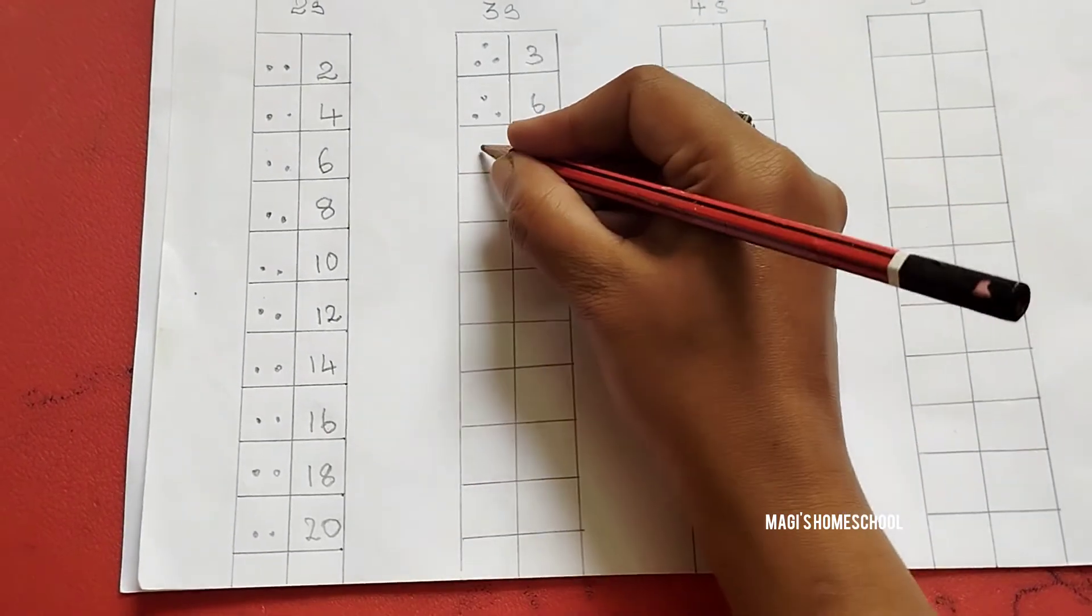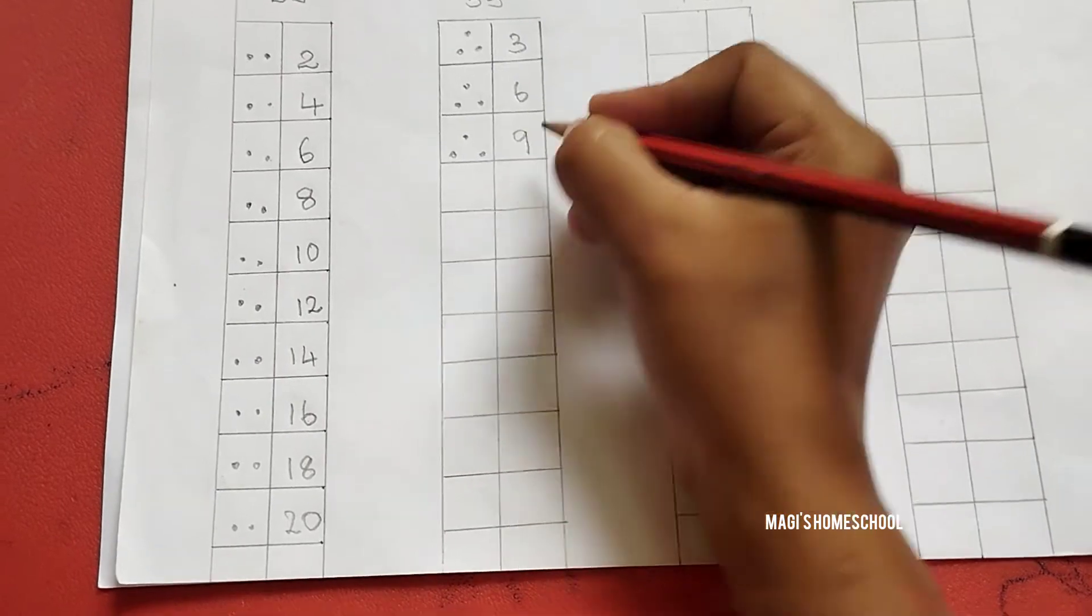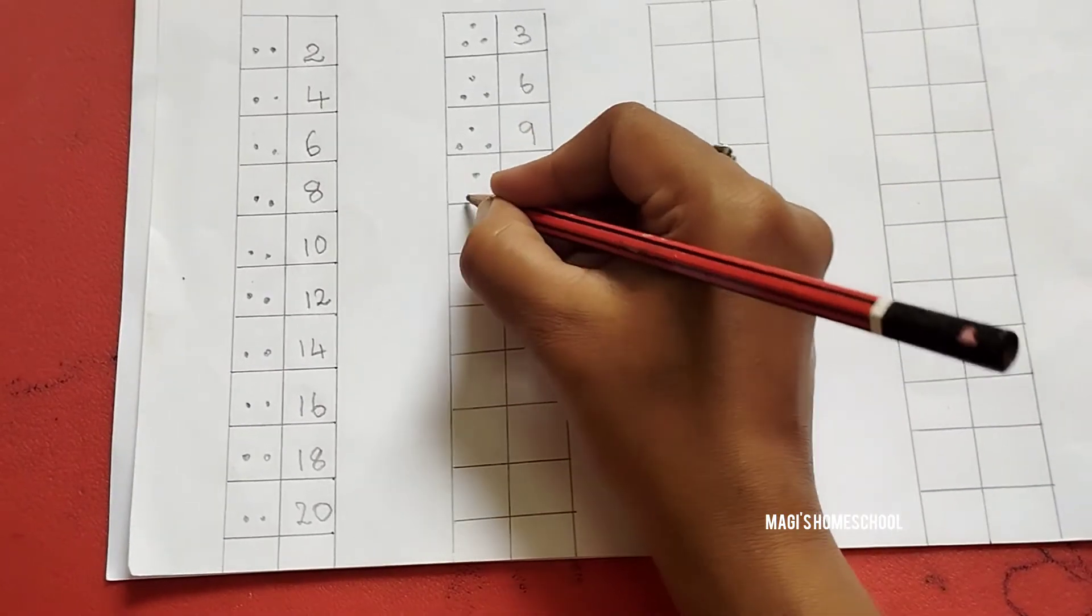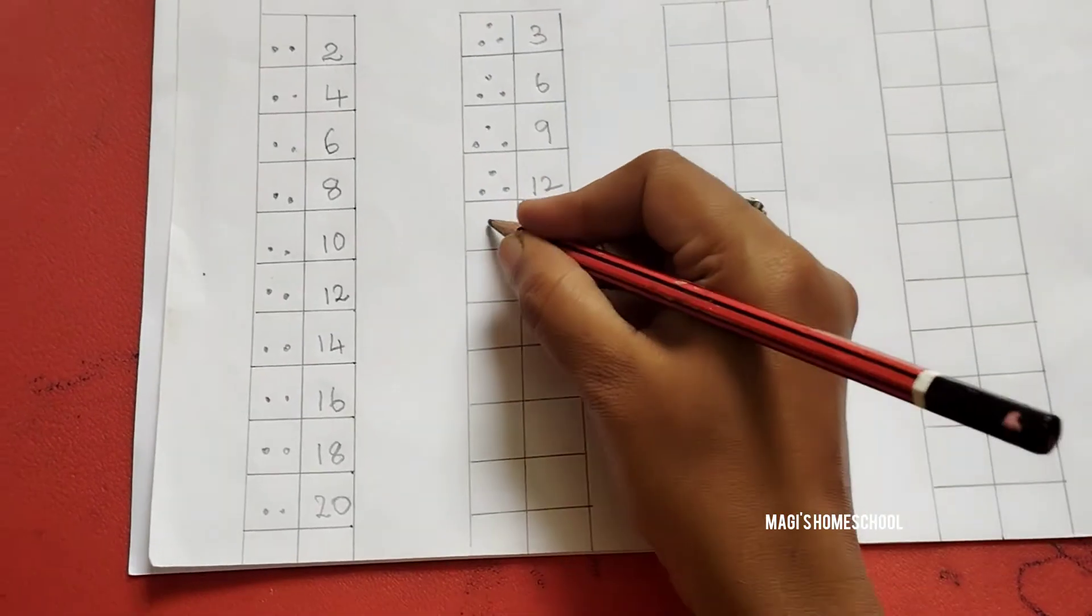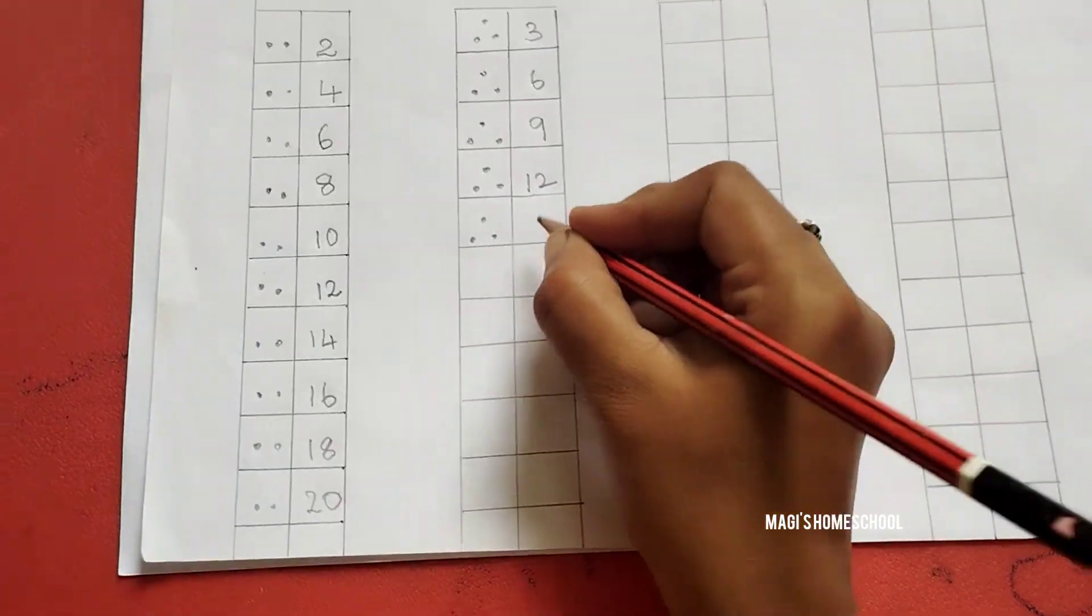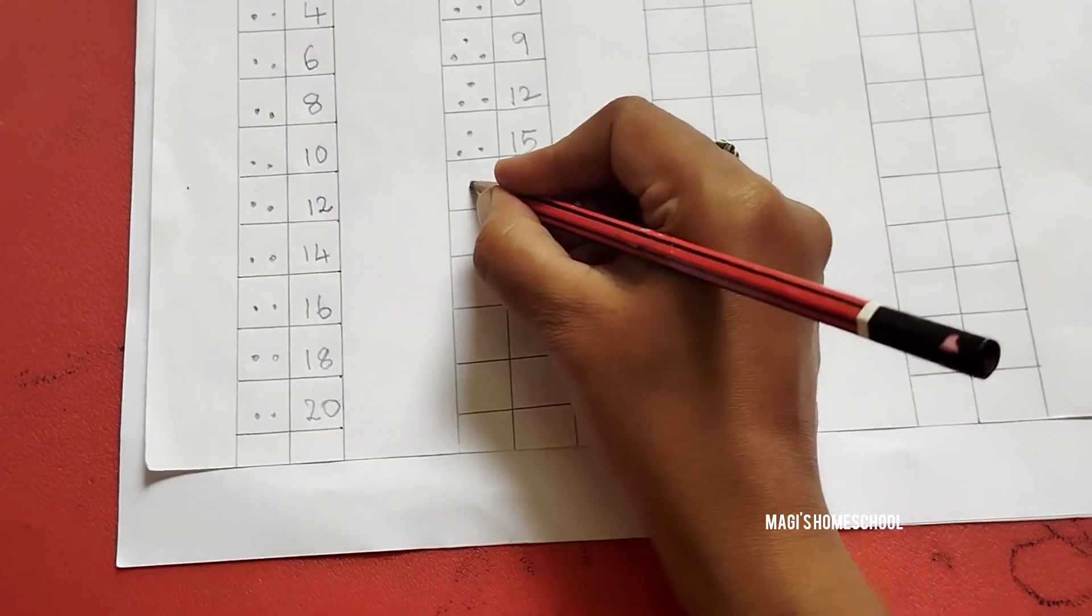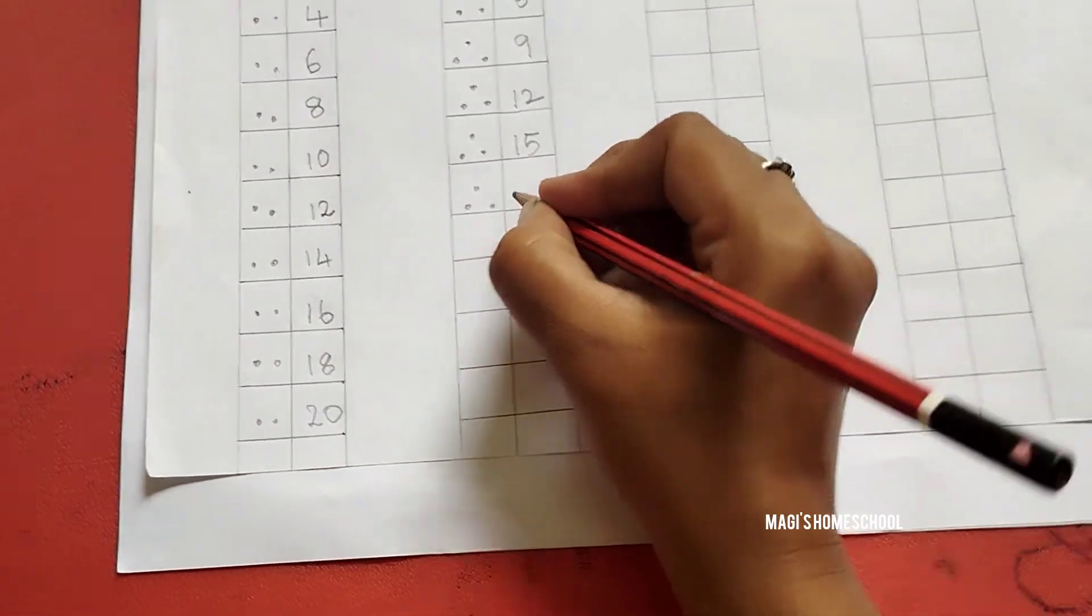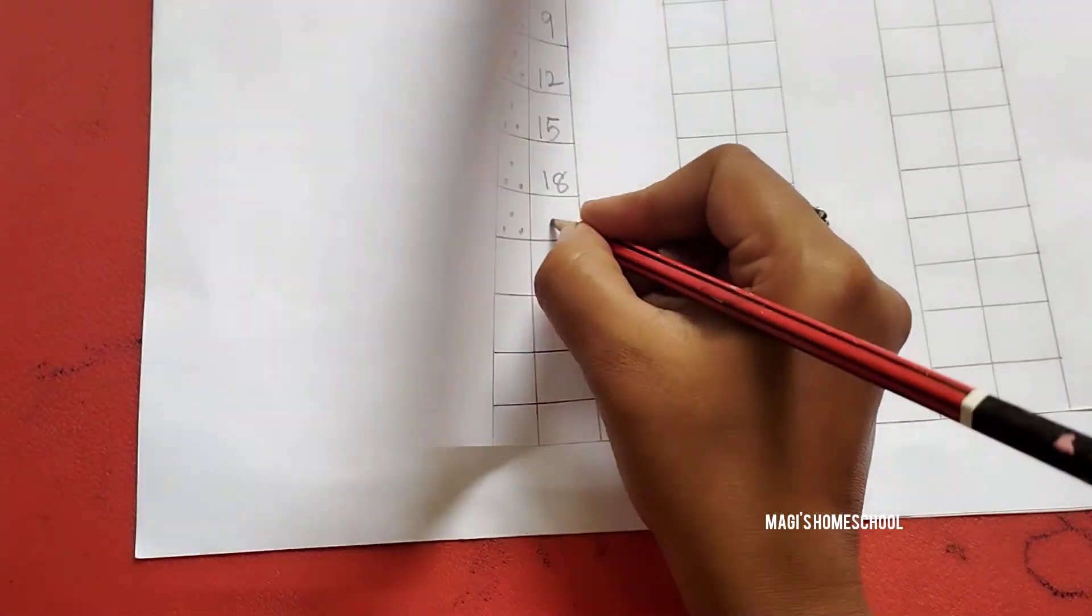After 6, 7, 8, 9. After 9, 10, 11, 12. Write 12. After 12, 13, 14, 15. Write 15. After 15, 16, 17, 18. Write 18. After 18, 19, 20, 21.